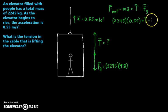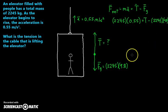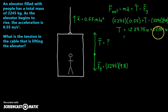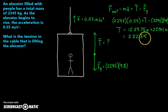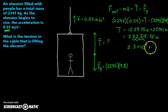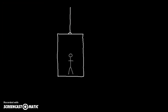So we have 2245 times 0.55, which equals tension minus 2245 times 9.8. This is pretty easy algebra — my tension equals the sum of those two numbers: 1234.75 Newtons plus 22001 Newtons, giving 23235.75 Newtons. But that's not my final answer — I need significant digits. With two significant digits, that's 2.3 times 10 to the 4 Newtons. So that is my tension force.